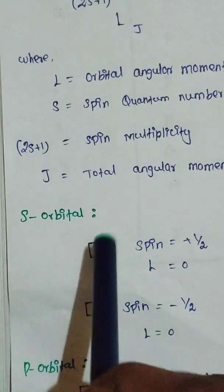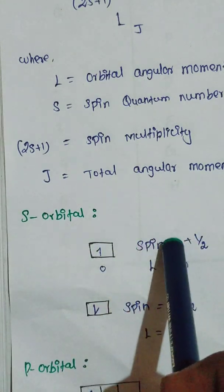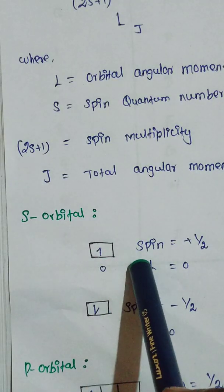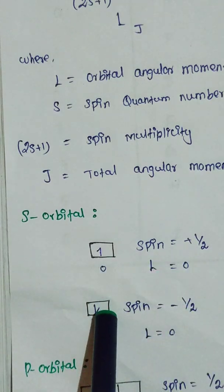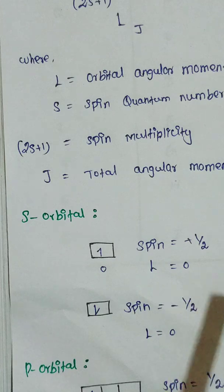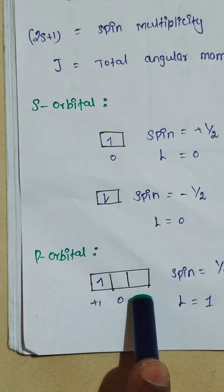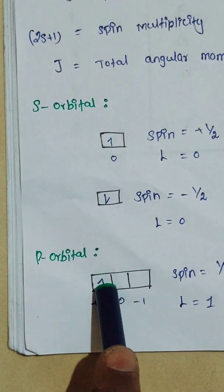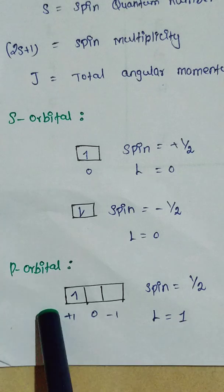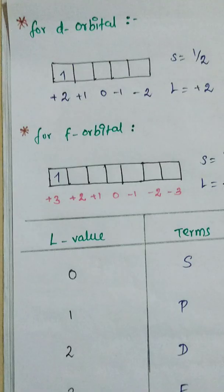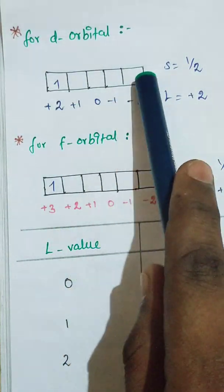For the s orbital, it has only one subshell, so the spin value is plus half or minus half, and the L value equals zero. For the p orbital, it has three subshells: plus one, zero, and minus one. For the d orbital, it has five subshells: plus two, plus one, zero, minus one, and minus two.